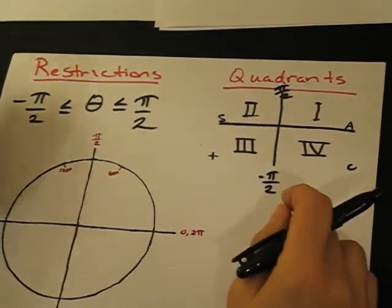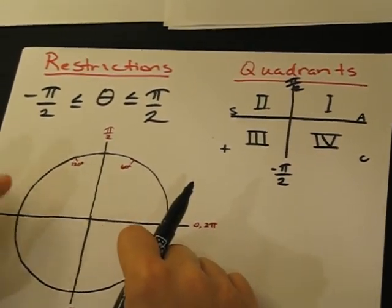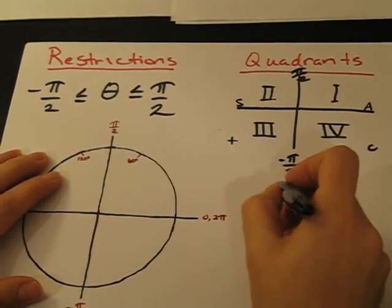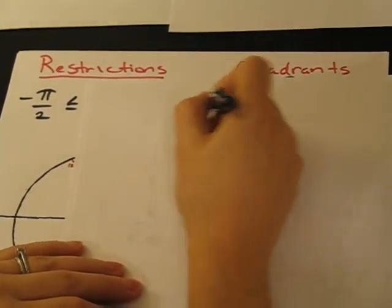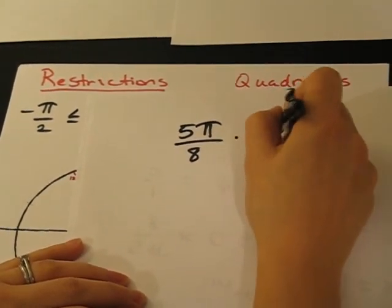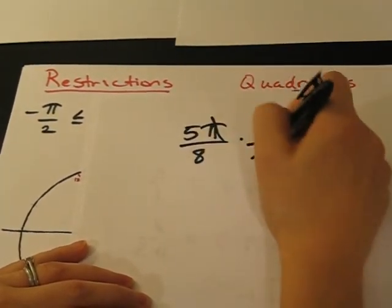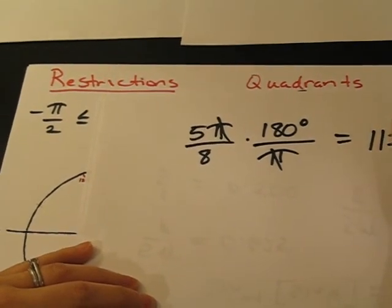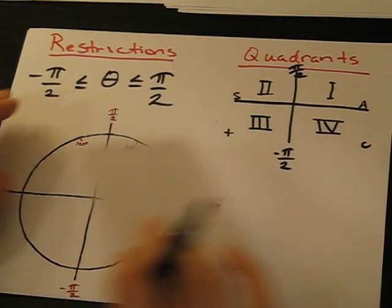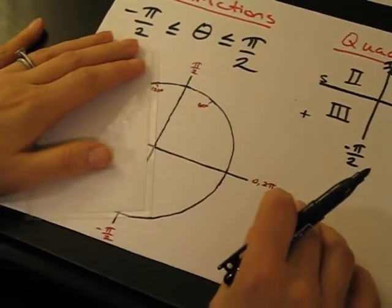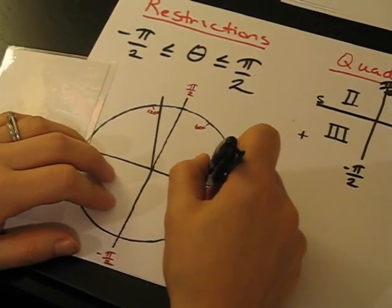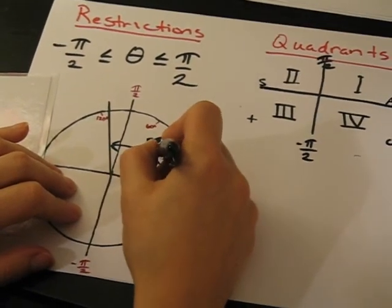So the first thing I'm going to do is I'm going to map the angle that we have, the five-eighths pi. I'm going to map that onto our unit circle. And so I like to make it a degree so that I can see it better. So five-pi over eight equals 112.5 degrees. Makes it more visual for me. And so we're at 120 right here on the unit circle. Our angle is going to be at 112.5. That's our five-pi over eight.